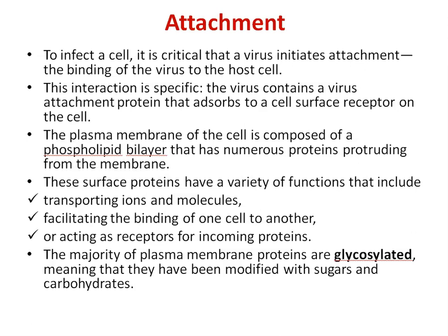The plasma membrane of the cell is composed of a phospholipid bilayer plus has numerous proteins protruding from the membrane. These surface proteins have a variety of functions that include transporting ions and molecules, facilitating the binding of one cell to another, or acting as receptors for incoming proteins. Majority of the plasma membrane proteins are glycosylated, meaning they have been modified with sugars and carbohydrates.